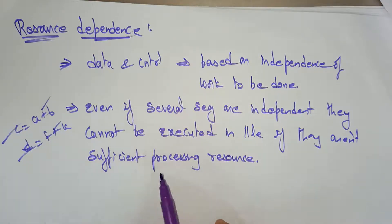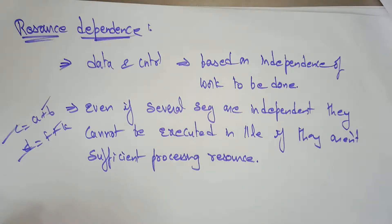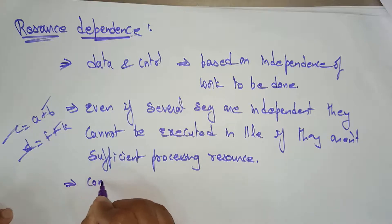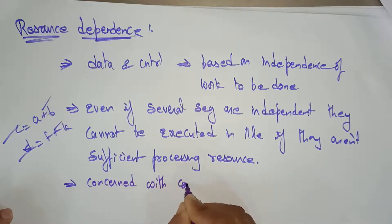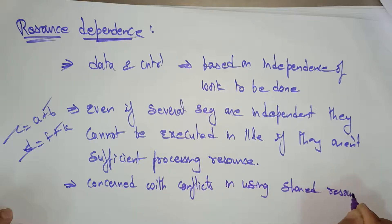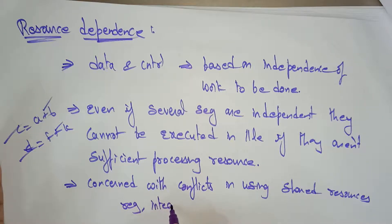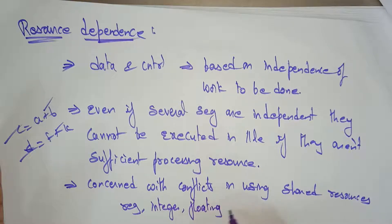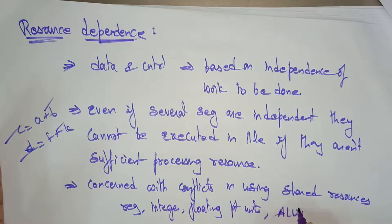That is what resource dependency means — even if several segments are independent, they cannot be executed in parallel if there are not sufficient processing resources. Resource dependency is concerned with conflicts in using shared resources. These shared resources include registers, integer and floating point units, arithmetic logic units, and memory areas among parallel events.